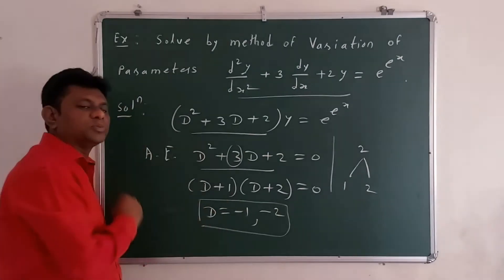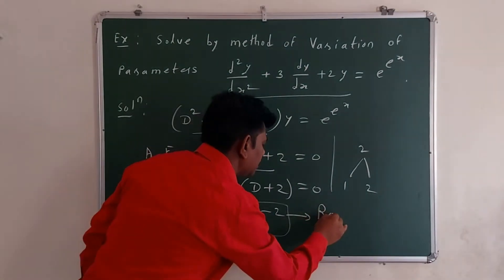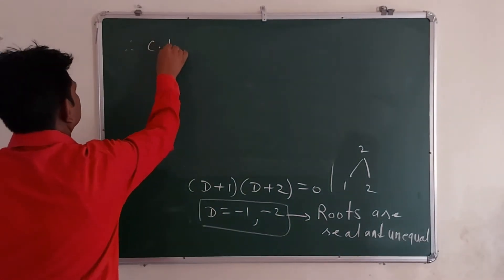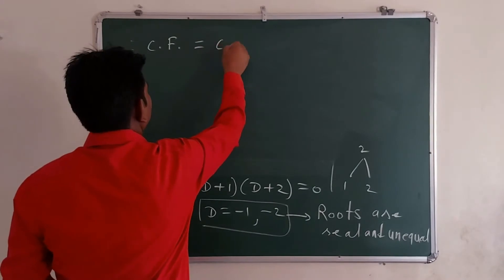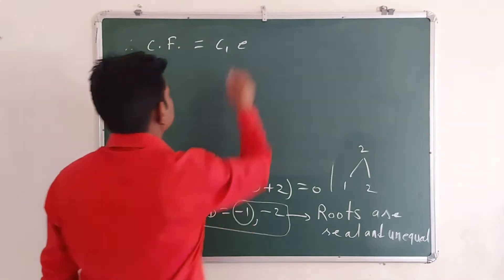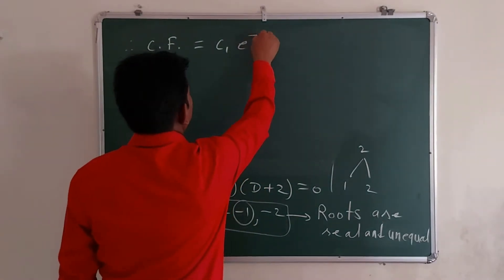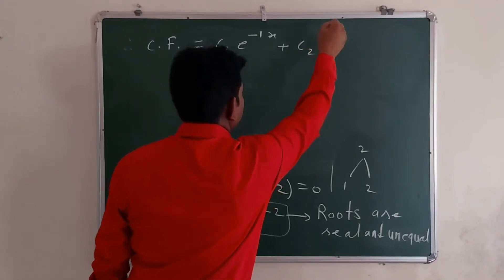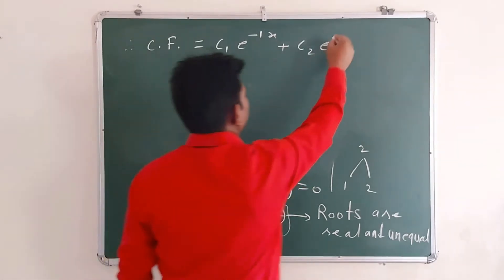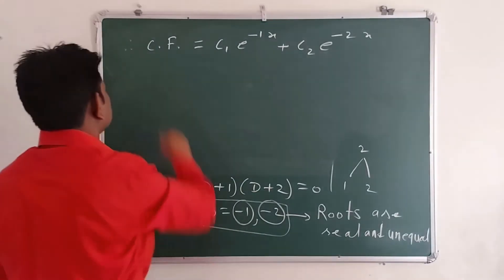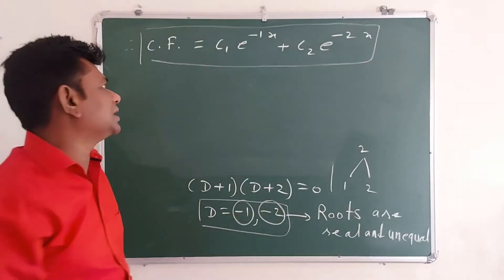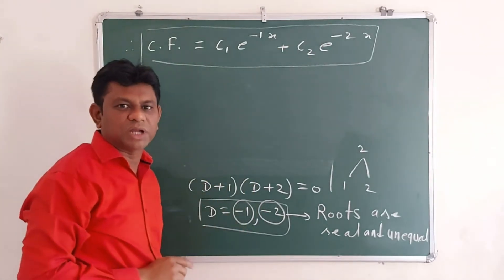The nature of the roots is real and unequal. Therefore, the complementary function CF = c1·e^(m1·x) + c2·e^(m2·x), where m1 = -1 and m2 = -2. So CF = c1·e^(-x) + c2·e^(-2x).